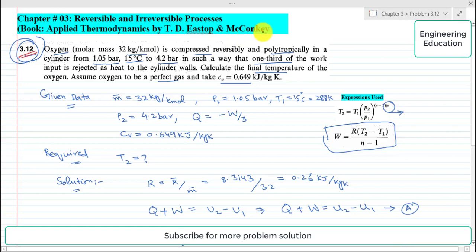The statement of the problem is: oxygen, molar mass is 32 kg per kilomole, is compressed reversibly and polytropically in a cylinder from 1.05 bar, 15 degree centigrade to 4.2 bar in such a way that one-third of the work input is rejected as heat to the cylinder walls.